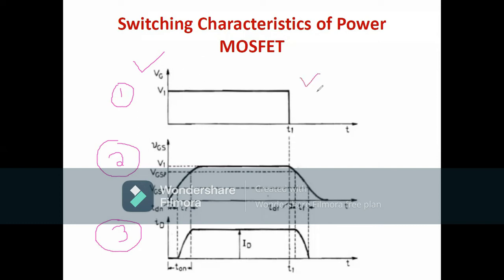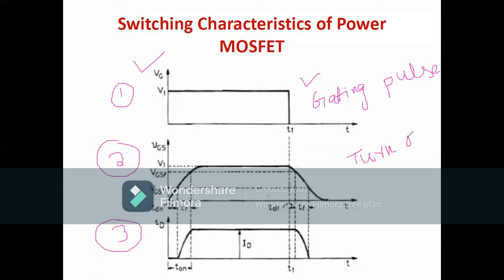The gating pulse is essential because the MOSFET is a controlled device. To turn off the MOSFET, you have to apply the gating pulse to zero or apply a negative gating pulse — that is the turn-off method. In switching characteristics we are majorly focusing on the turn-on and turn-off characteristics. These are the two major segments of switching characteristics: turn-on characteristics and turn-off characteristics.